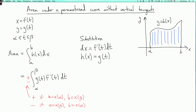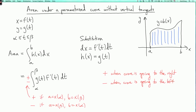What does that mean geometrically? Well, a equals x of alpha and b equals x of beta when our curve is going to the right. The other case is when the curve is going to the left. So it's plus when the curve is going to the right, and minus when the curve is going to the left. If you forget to check the sign, at the end of the calculation, as a reality check, make sure your answer is not negative — because areas are never negative. If you get a negative number, you messed up one of these signs.